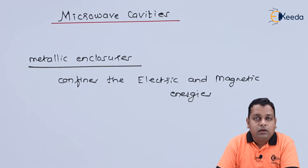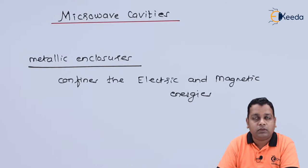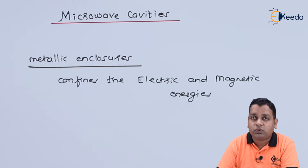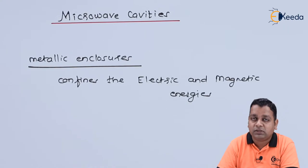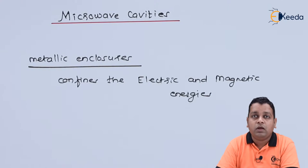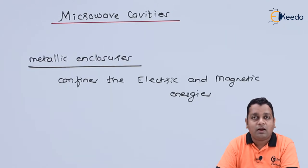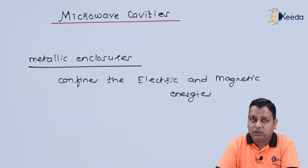The resonators are basically for the purpose of storage of energy and then dissipation of energy. We can have storage of electrical energy and its dissipation, and storage of magnetic energy and its dissipation. This storage and dissipation is governed with the help of the quality factor, which we have already addressed in the previous unit, and we shall be further deriving it for the cavity resonators — rectangular and circular.